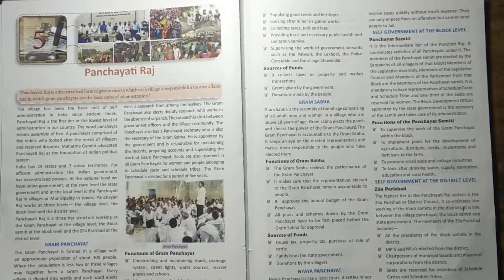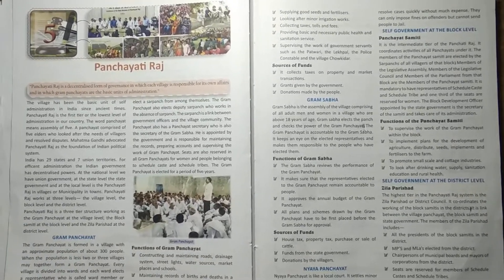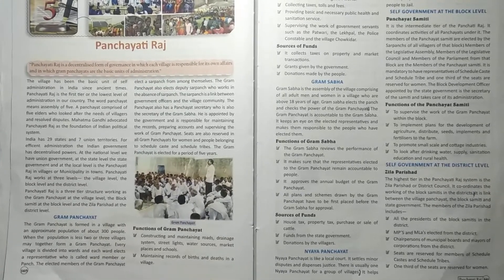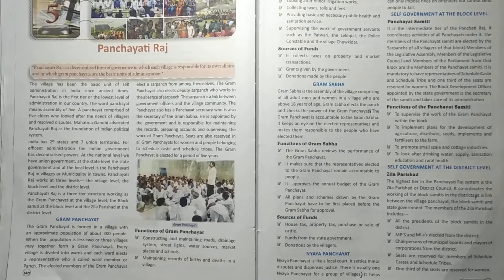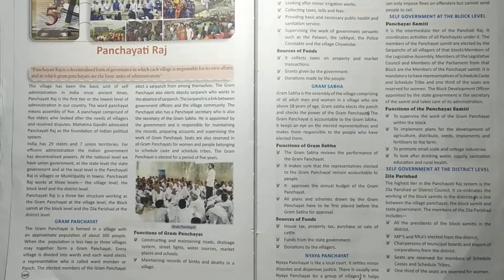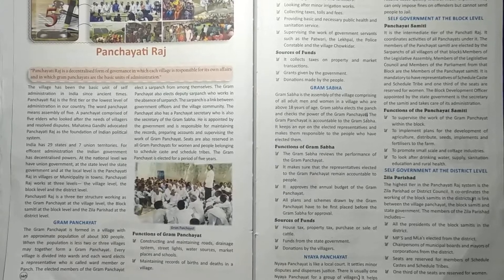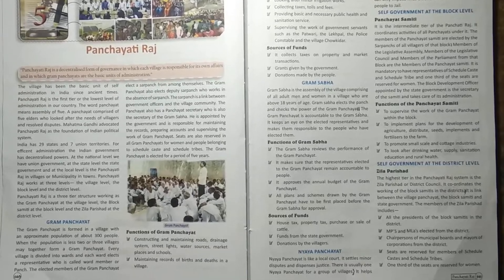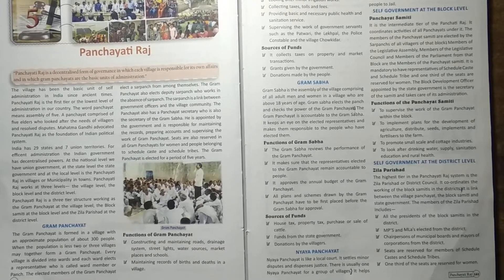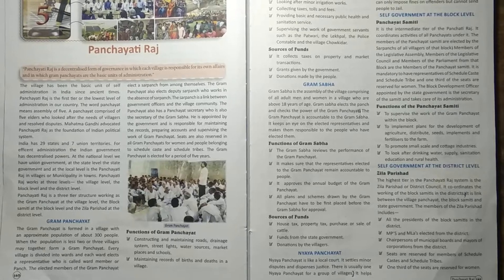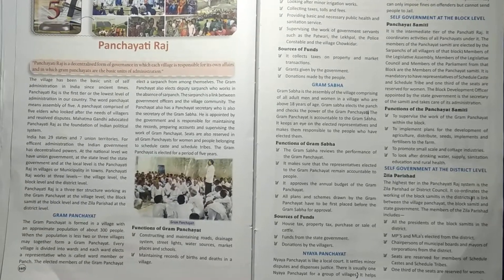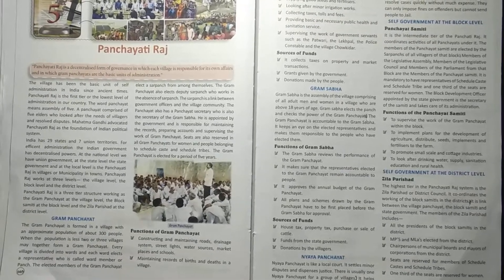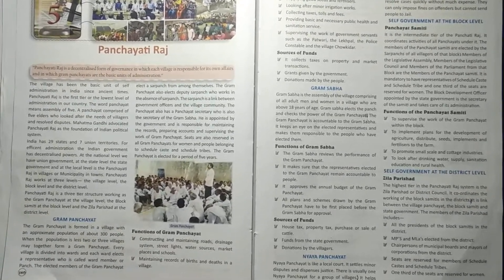Gram Panchayat. The Gram Panchayat is formed in a village with an approximate population of about 300 people. When the population is less, two or three villages together form a Gram Panchayat. Every village is divided into wards and each ward elects a representative called a ward member or Panch. The elected members of the Gram Panchayat elect the Sarpanch from among themselves. The Gram Panchayat also elects a deputy Sarpanch who works in the absence of the Sarpanch. The Sarpanch is the link between government officers and the village community.